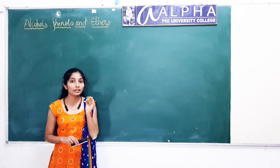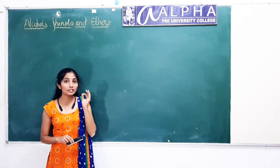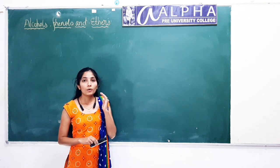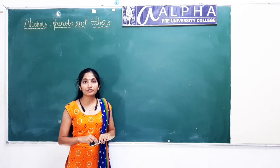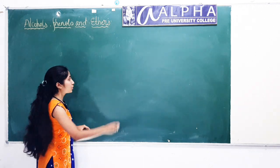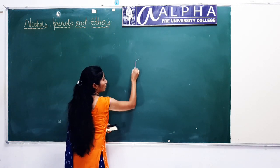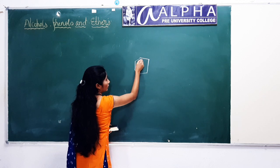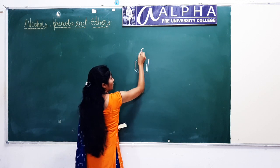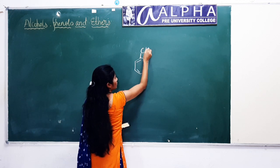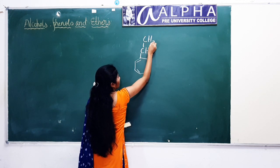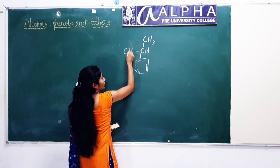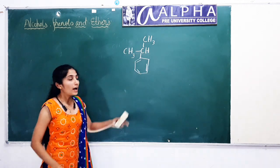As you remember, in one method we learned the preparation of phenol from cumene. What is the structure of cumene? Cumene is nothing but isopropylbenzene. The structure of cumene is: a benzene ring with a CH(CH₃)₂ group attached.